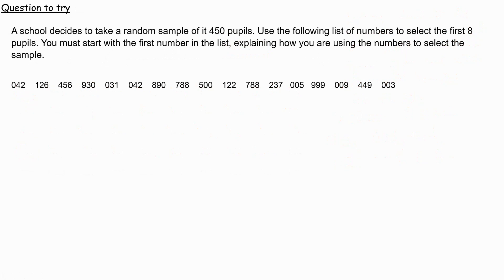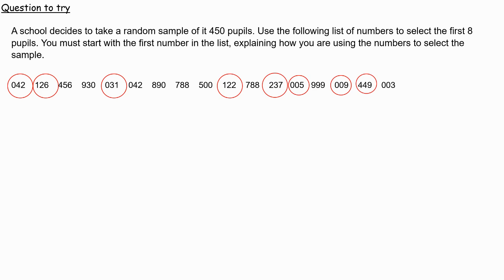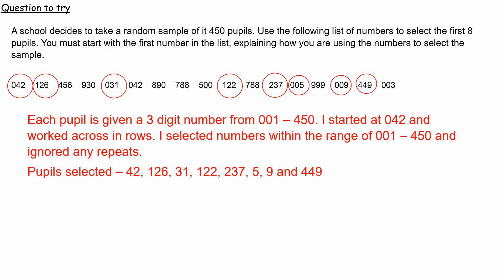Here's a question for you to try. Please pause the video and have a go — when you're ready for the answer, press play. Note that you need to start with the first number and work to the right. Here is the answer — these are the eight numbers that should be selected. We gave each pupil a unique three-digit number from 001 to 450, started at the given position, worked across in rows, selecting numbers within the range 001 to 450, and ignored any repeats.